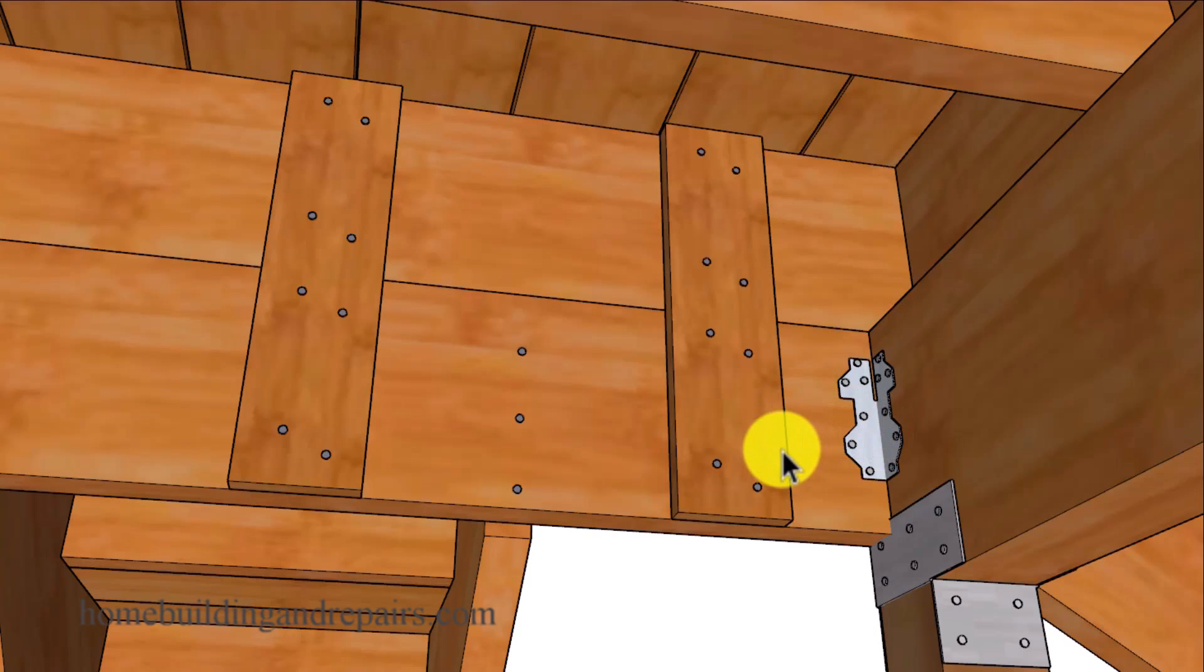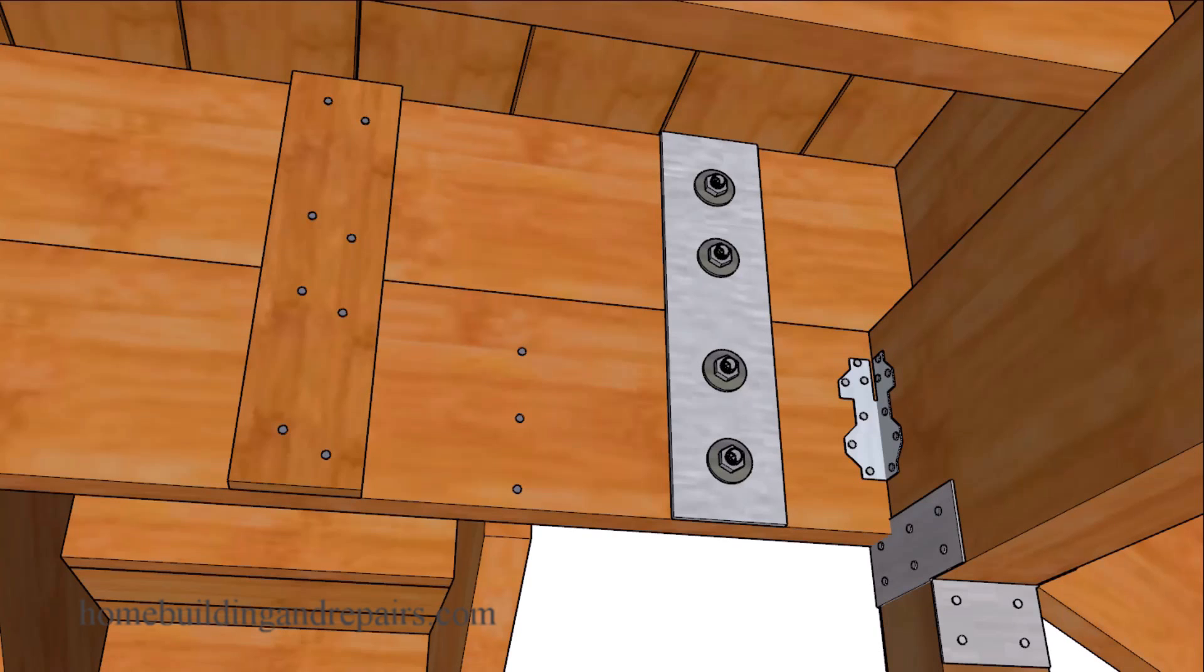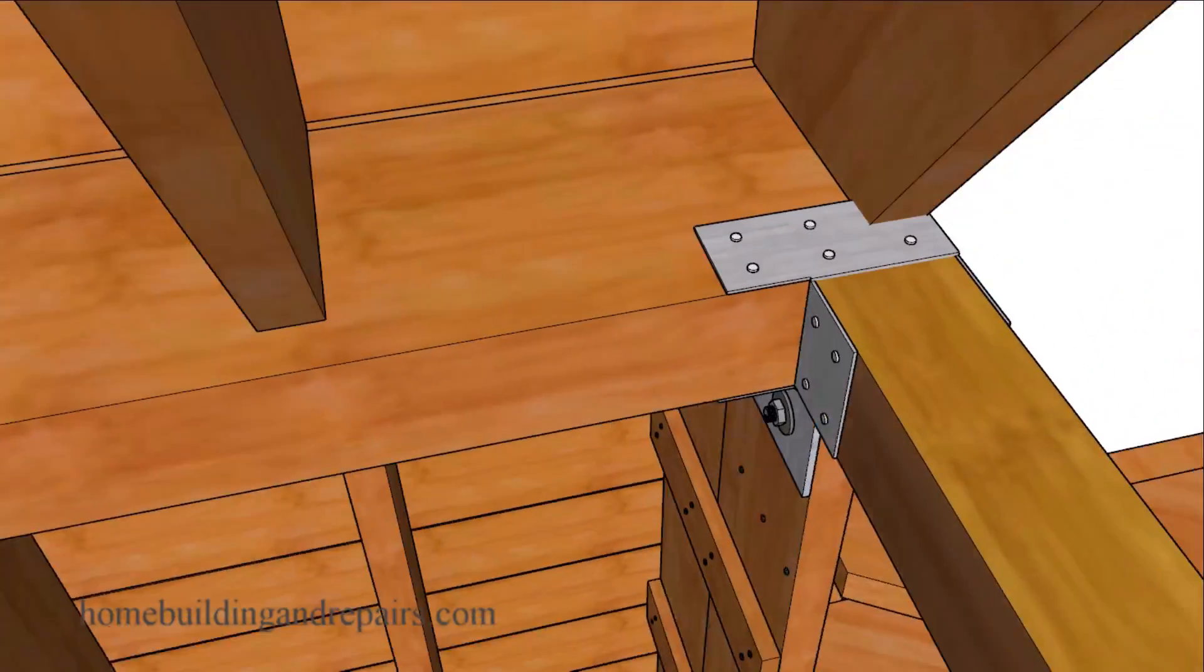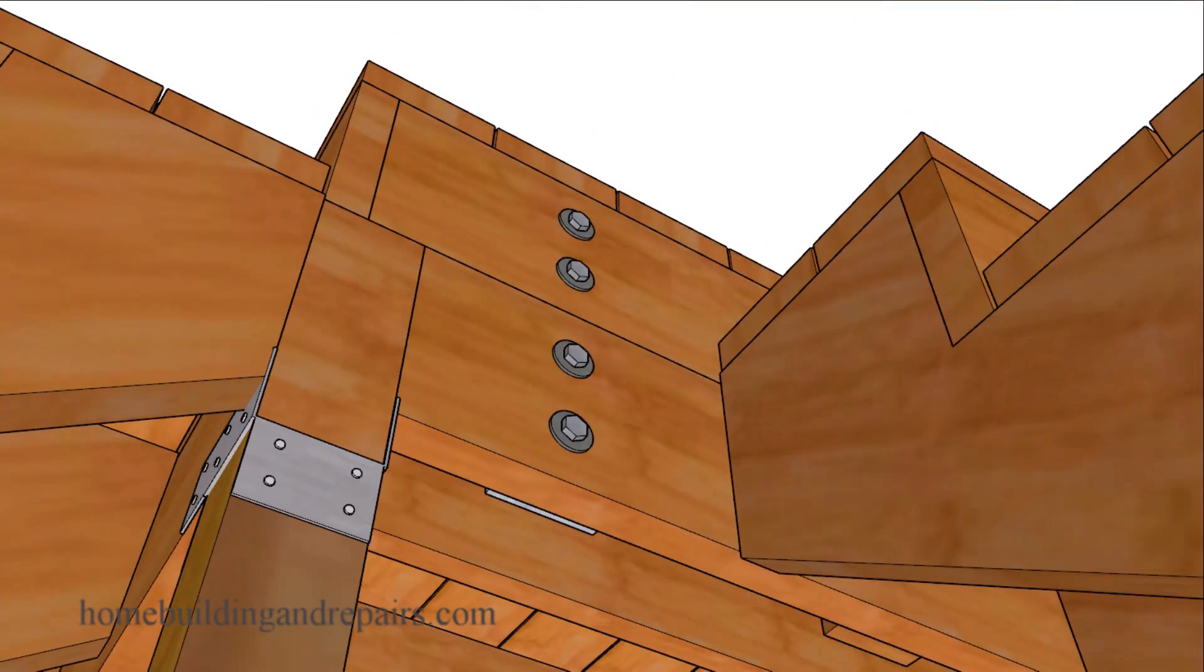And instead of using lumber you might be able to use some hardware, maybe some straps or even some thicker metal quarter inch thick that you might be able to use, maybe one on each side or even just one on one side, where you would drill some holes through the lumber and use bolts to connect the two boards together.